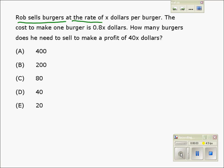Rob sells burgers at the rate of X dollars per burger. The cost to make one burger is 0.8X dollars. How many burgers does he need to sell to make a profit of 40X dollars?